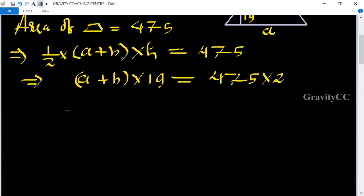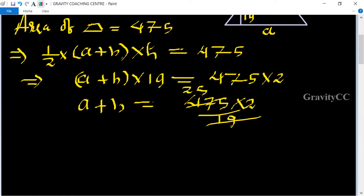So a plus b equal to 475 multiply 2 upon 19. Cancel by 19, so 25 times 2 is 50. So a plus b equal to 50. This equation is the second equation.